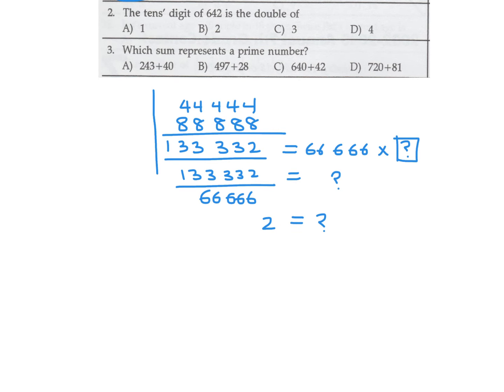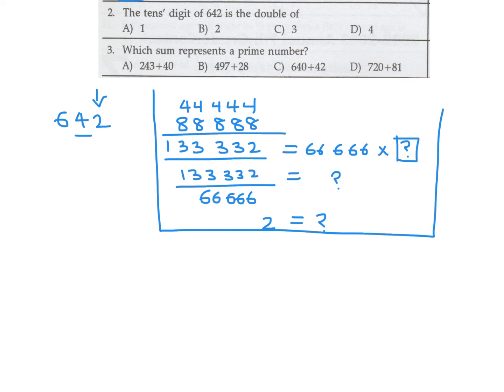The tens digit of 642 — first, 642: this is the ones digit, this is the hundreds digit, so this is the tens digit, which is 4. Four is the double of 2, because 2 times 2 is 4. Therefore number 2, the answer would be 2, and that's B.